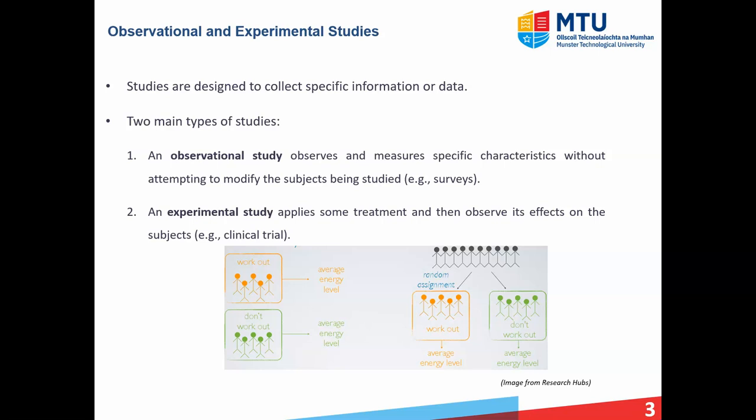We're not asking them to change their habits. Whereas on the right-hand side with the experimental study, we take a sample from the entire population and randomly assign people from that sample into two groups. In the first group, we ask those people to work out regularly, and in the second group, we tell them do not work out regularly. So we as the researcher are controlling this experiment — telling group one to actively work out and group two to not work out. This is a clear difference between an observational study and an experimental study.